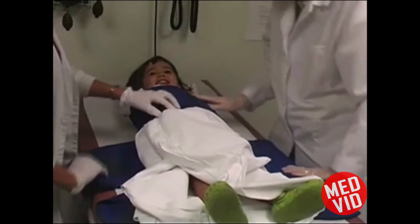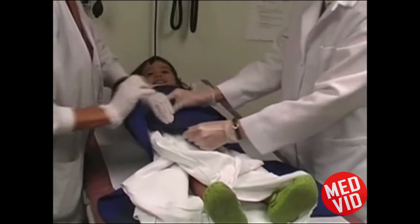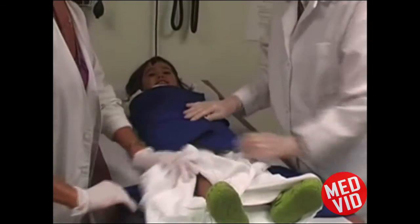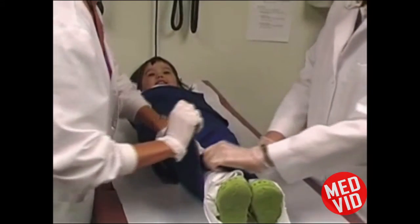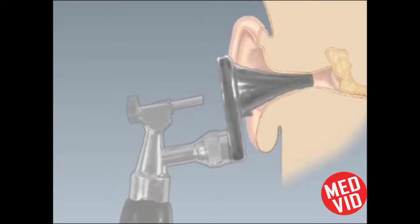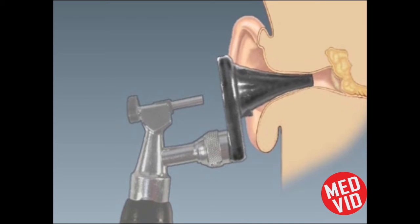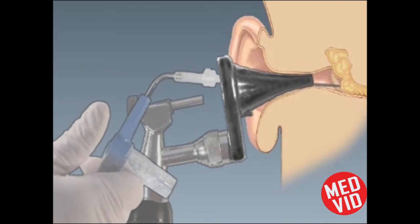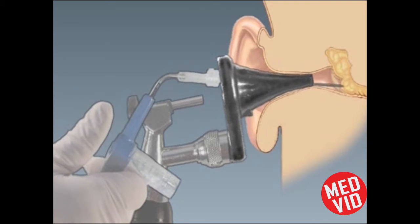First, fully immobilize the child in a papoose board and secure the child's head. Cerumen should be removed before you begin the procedure. We will demonstrate the procedure with this animation, which shows the steps from the coronal view. Under direct visualization, advance the needle toward the tympanic membrane while keeping your thumb poised over the orifice of the tympanocentesis aspirator without occluding it.